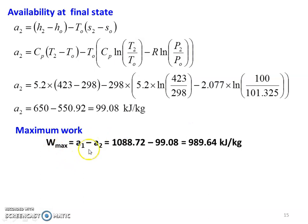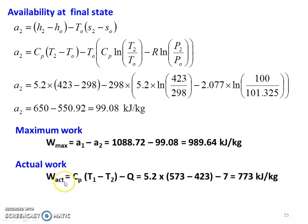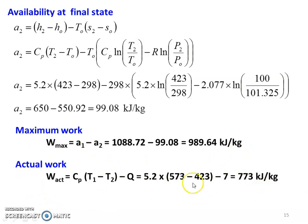Maximum work equal to A1 minus A2. A1 equal to 1088.72, A2 equal to 99.08. So maximum work equal to 989.64 kJ per kg. Actual work equal to CP into (T1 minus T2) minus Q: 5.2 into (573 minus 423) minus 7, equal to 773 kJ per kg. So both maximum work and actual work are calculated.